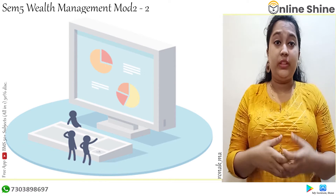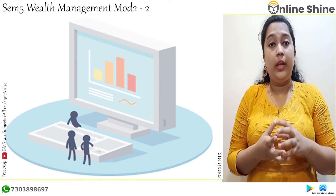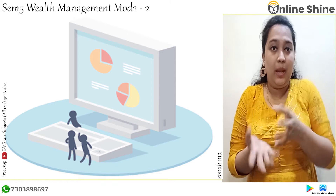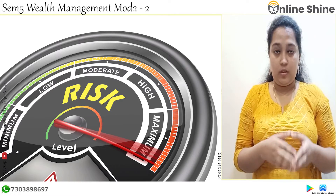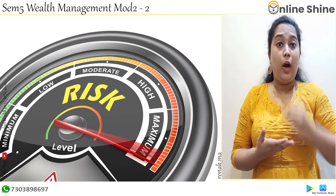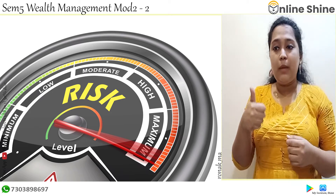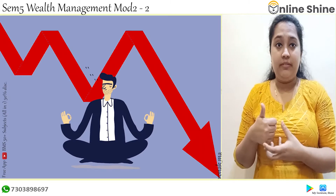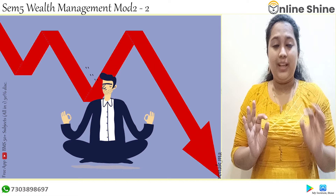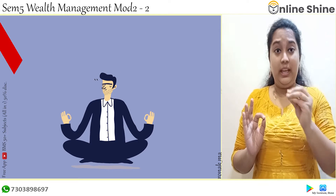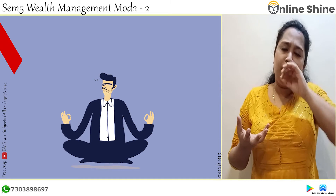So these are the few risks which an investor has to face while investing his money. Now let us see the risk profile of an investor. This profile indicates how much risk an investor wants to take. The first type is low risk or defensive investors — they are the ones who don't want to take any kind of risk. They want to invest their money somewhere where they will get a fixed return.